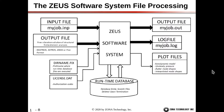Here is an overview of the Zeus software system file processing. Before running Zeus, you generate an input file — a text file, in this case called myjob.imp. By convention, Zona software input files are named .imp, but they are just text files that can be edited with any text editor.